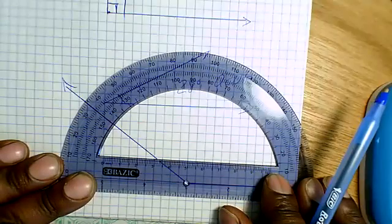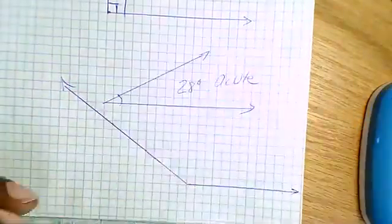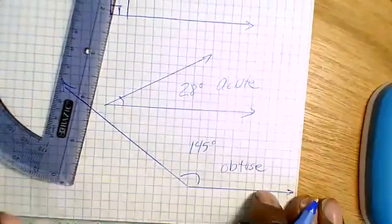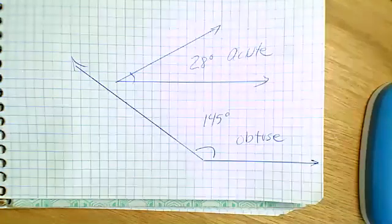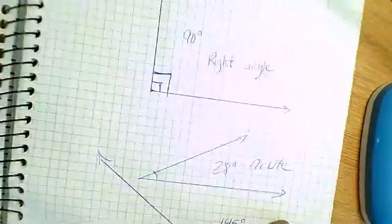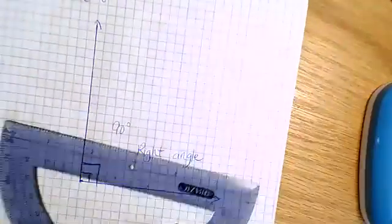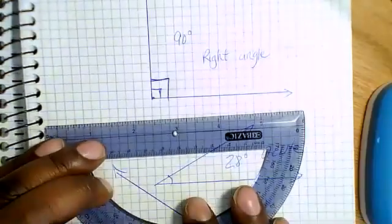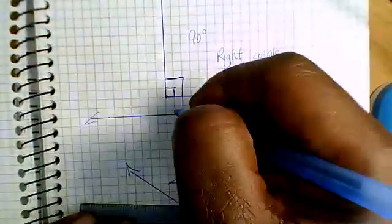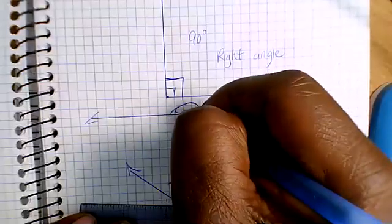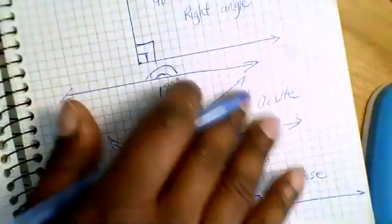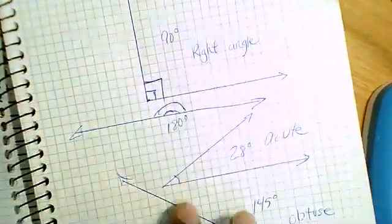The last angle that I want you to make note of in your binder is a straight angle. The straight angle just goes straight. Now, who can tell me the measurement of a straight angle? 180 degrees—that's right. If you don't have your protractor, when you get it, copy this down.